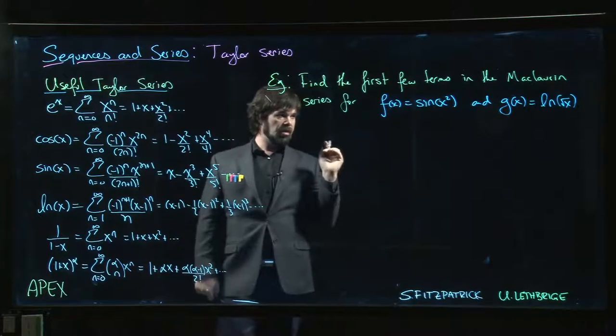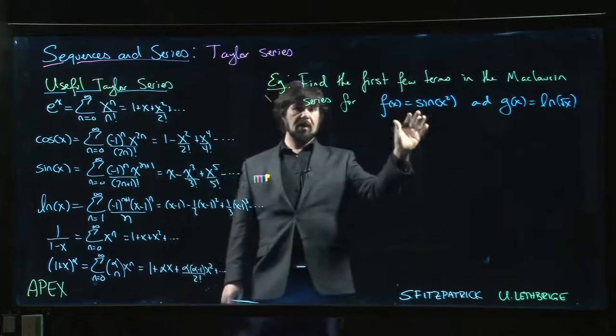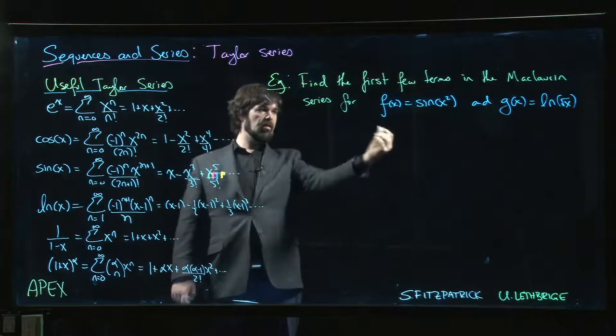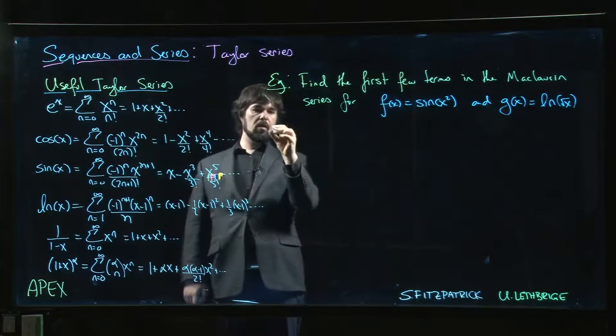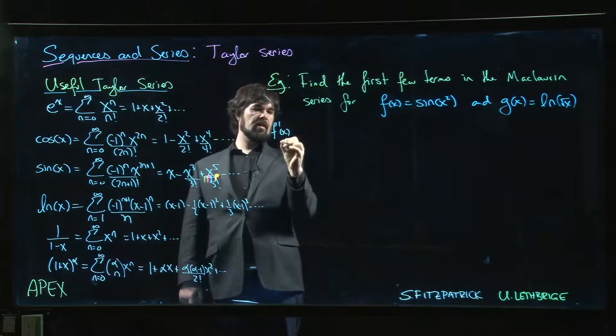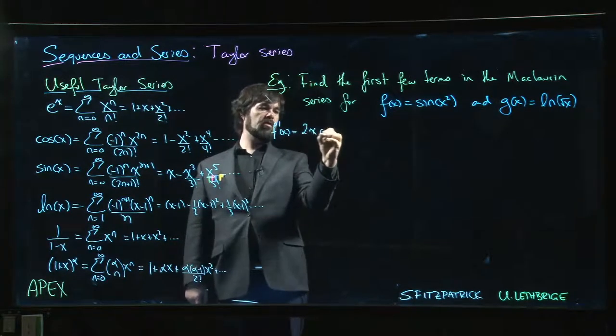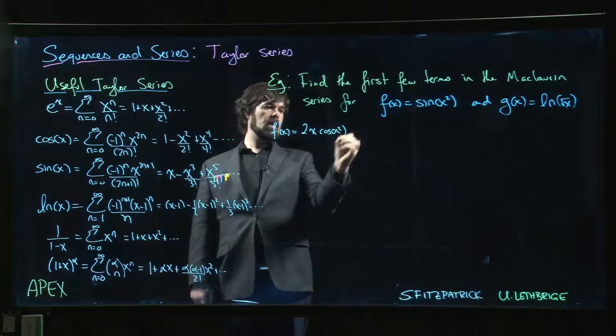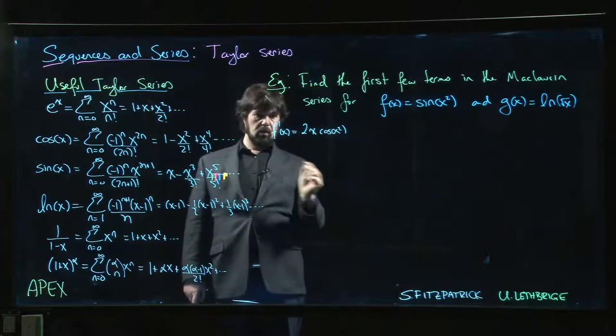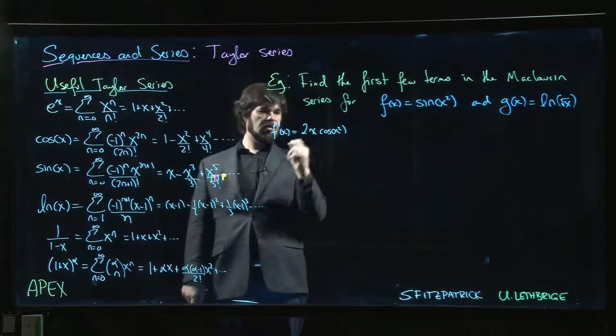Think about if you were trying to actually do this one by hand from the definition. You had to start calculating derivatives. f(0) is 0, we go to f'(x), we get 2x cos(x²) because we have to do chain rule for the inside. That's also 0 at 0.